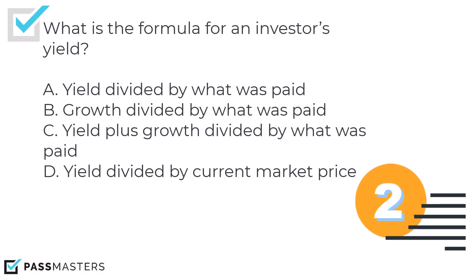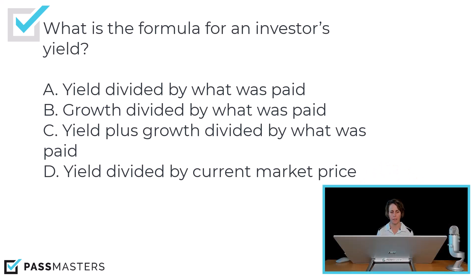What is the formula for an investor's yield? The answer choices are: yield divided by what was paid; growth divided by what was paid; yield plus growth divided by what was paid; or yield divided by current market price. Investor's yield is yield divided by what was paid — whatever the investor's cost for the security was. Yield on a stock is dividends; yield on a bond is interest. So we're looking at annual dividends or annual interest divided by what was paid — that's the investor's yield.